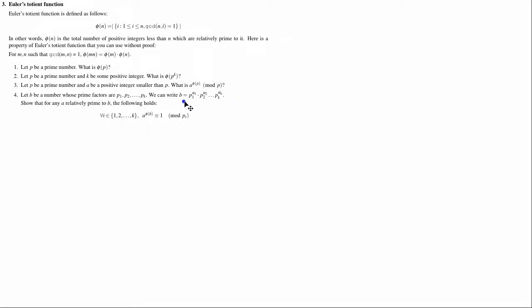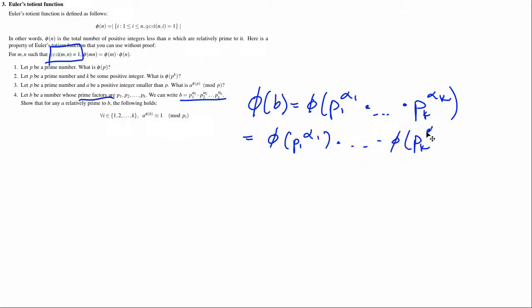In part 4, we have a really interesting expression here. B is this huge expression. So phi of b is equal to phi of p1^(alpha_1) times dot dot dot times p_k^(alpha_k). And what we realized is, since these p's are prime factors, they don't share any factors other than 1. And so, of course, gcd of all of these is, pairwise, is 1. And so we can break this multiplication apart.